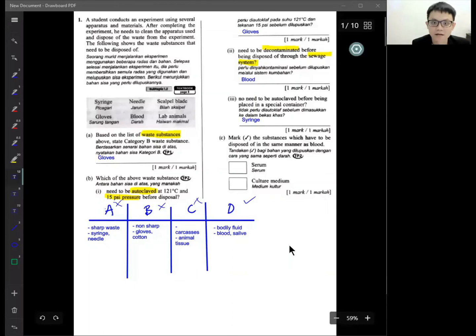Next question: mark correct the substance that has to be disposed in the same manner as blood. So we know blood is a fluid. When we're talking about category D is a fluid, means liquid. Serum and culture medium, which one we want to dispose like in the manner of blood? So the answer will be serum.